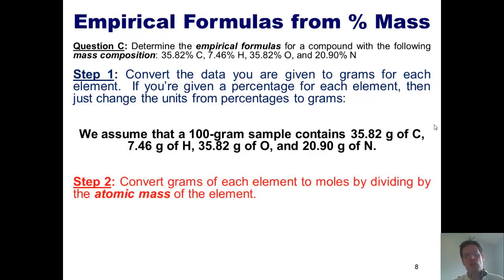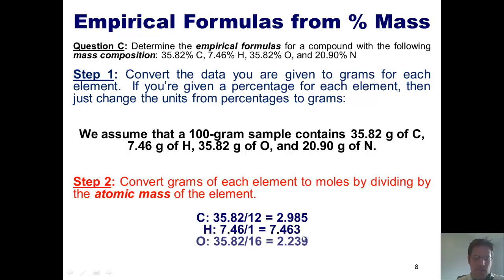Step two, convert these numbers by dividing every single one of them by the individual atomic mass for its corresponding element. 35.82 divided by the atomic mass of carbon is 2.985. 7.46 divided by the atomic mass of hydrogen, which is 1, is 7.46. 35.82 divided by 16, the atomic mass of oxygen is 2.239. And 20.90 divided by 14, the atomic mass of nitrogen is 1.493. Congratulations, we're done with step two.